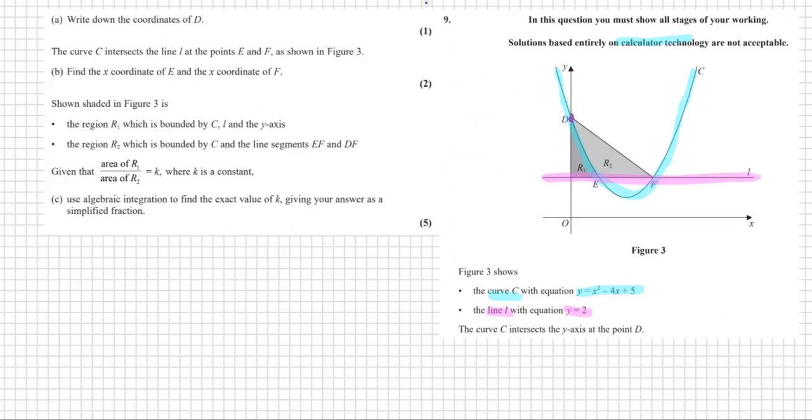Number A. Write down the coordinates of D. So D is the y-intercept of the curve. So anytime you have a y-intercept, you let x equal to zero. Or we could just do it by inspection, it'll just be the five here. But to show the working.